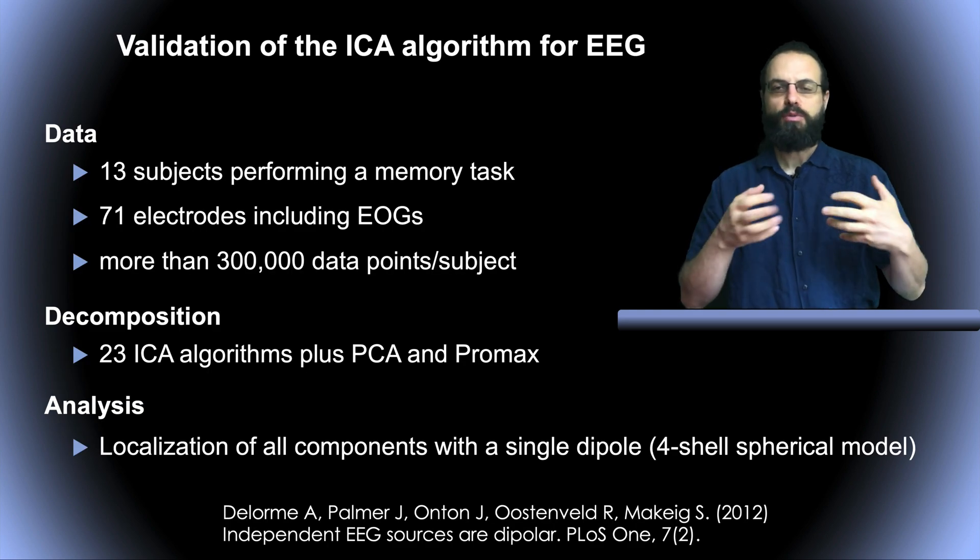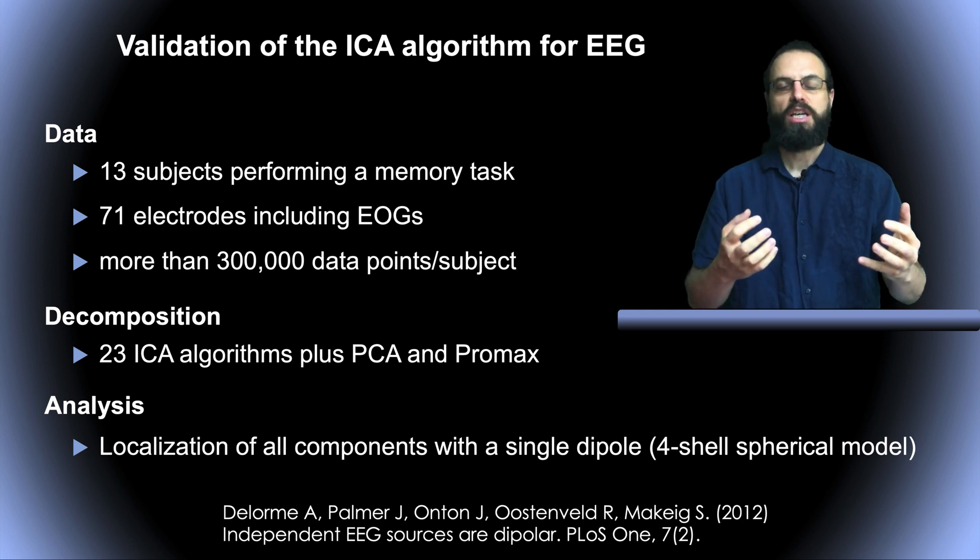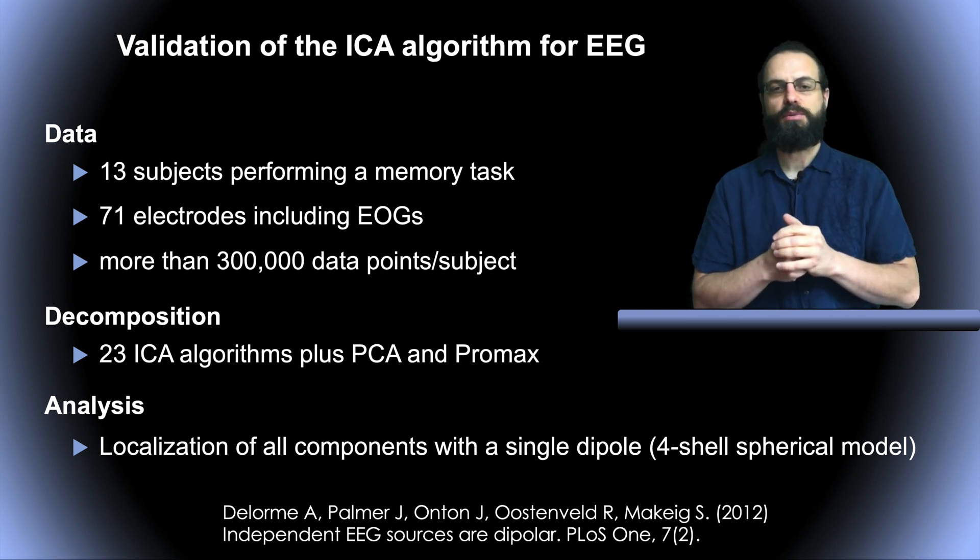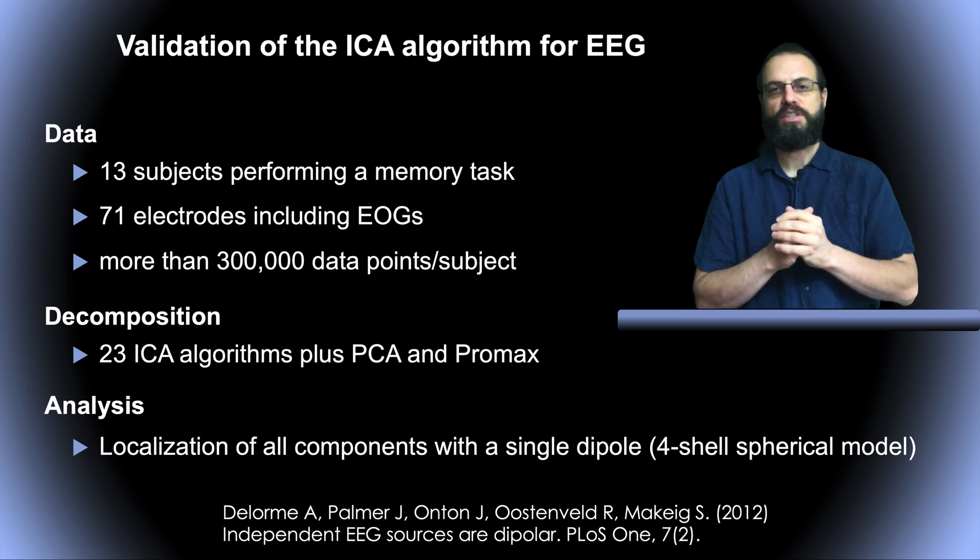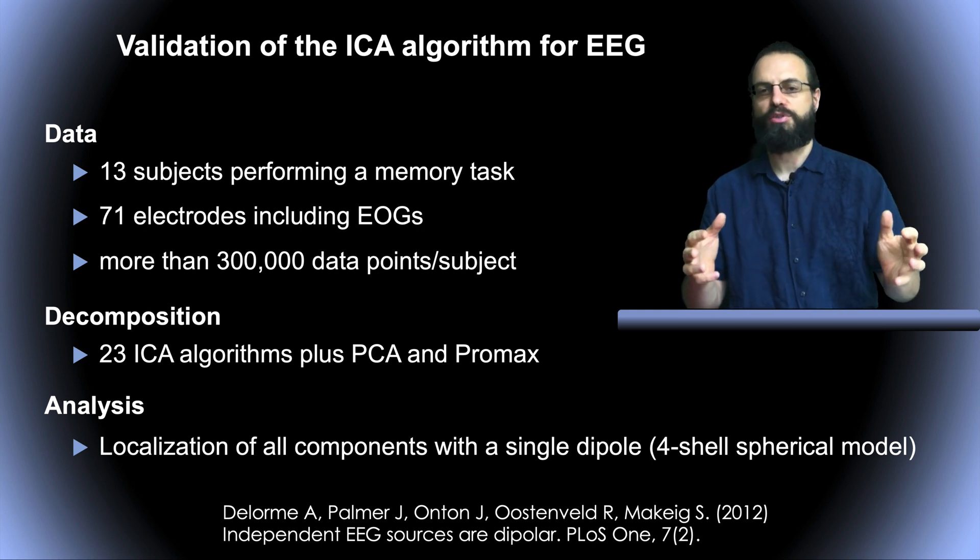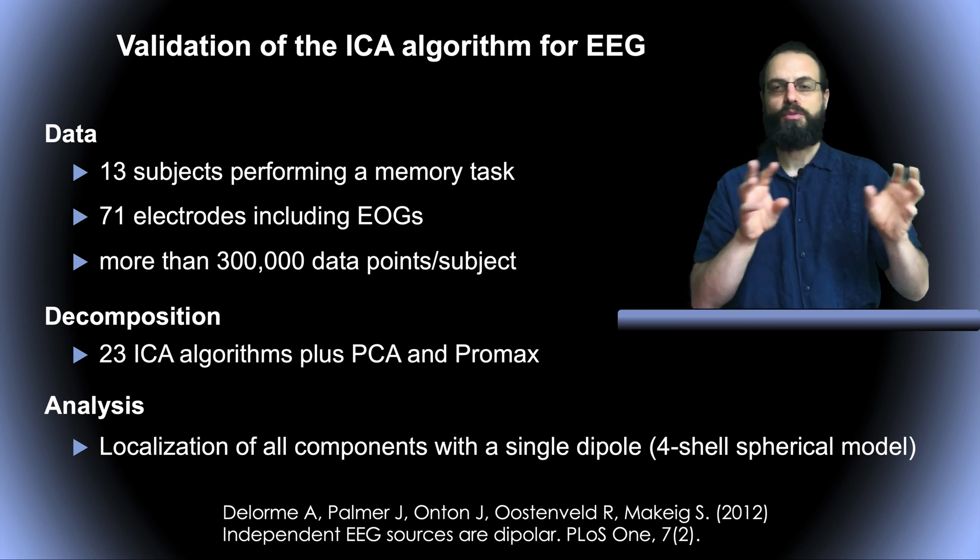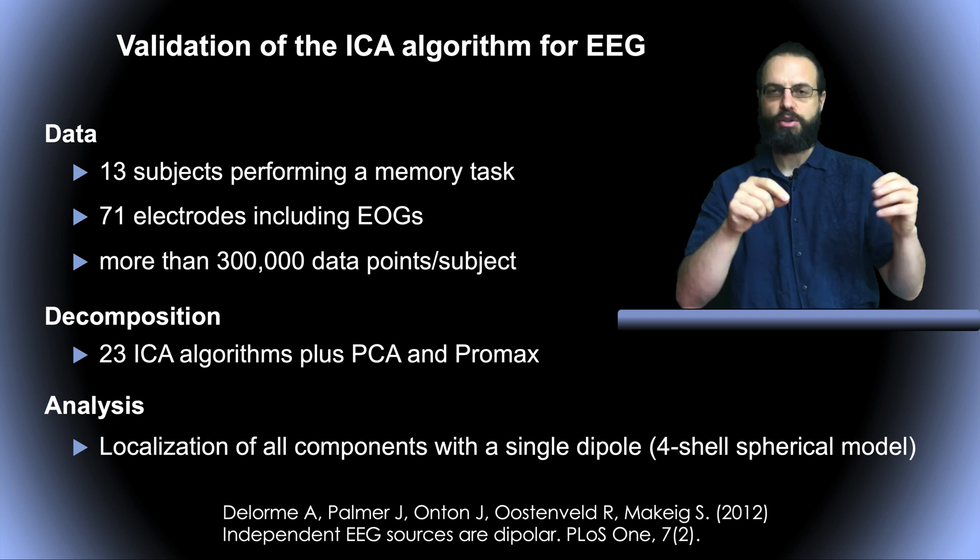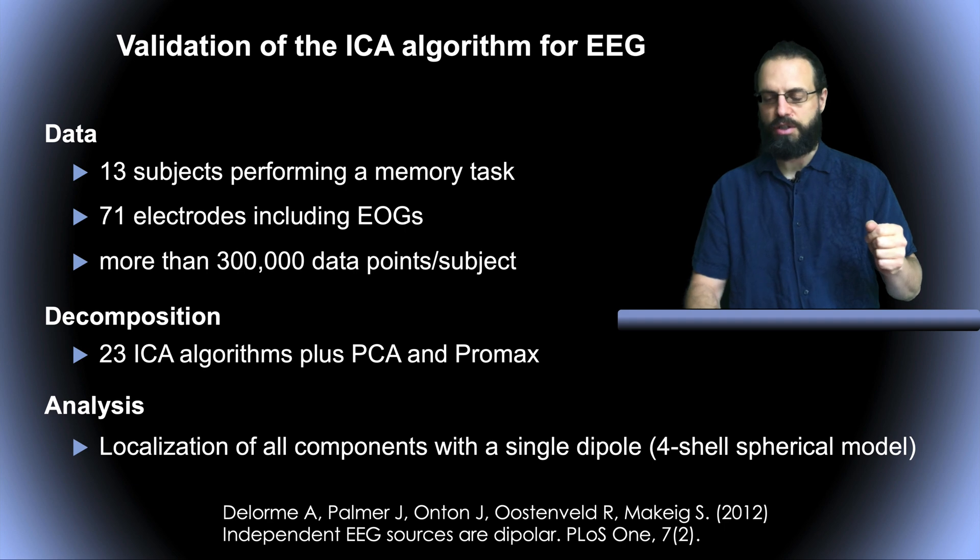We tried to see what happens when we use a lot of ICA components. Are these components dipolar or not? Here we did a relatively systematic study with 13 subjects, 71 electrodes, and a lot of data for this study—300,000 data points per subject. We tested also different ICA decompositions to see if one was performing better than the others. We localized these components and computed the residual variance. That's the publication here on the bottom.